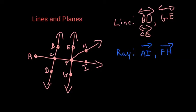You could also say ray FE, so we started at F and we went through E forever. You could also say ray FG, so that's still starting at F going through G forever. You could call FG a line, but you can also call it a ray if you're only looking at part of it.